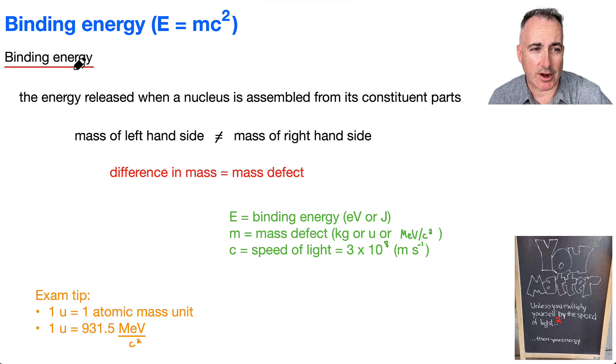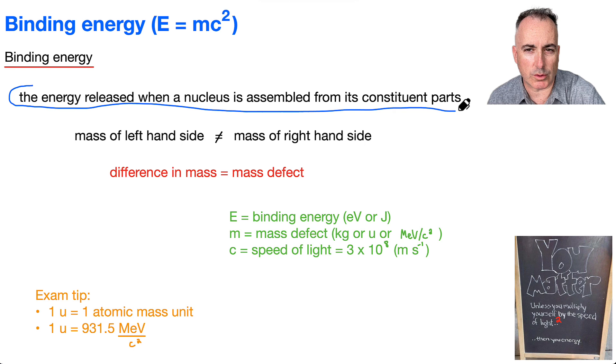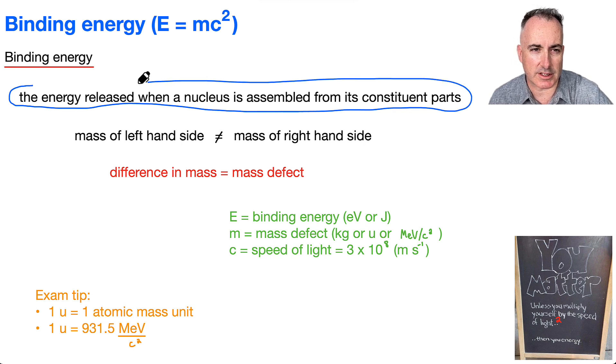What that is, is the energy that's released whenever you make a new nucleus. In other words, when the nucleus is assembled from its constituent parts. When you make a new nucleus, then there's energy that's released. And of course, if you want to break apart a nucleus, then it costs you energy. That's the same energy here, and we call this the binding energy.